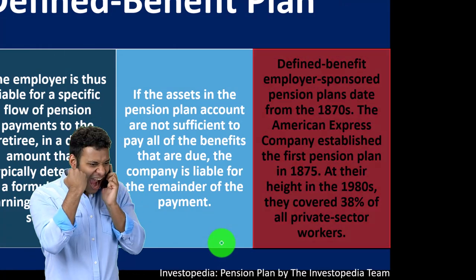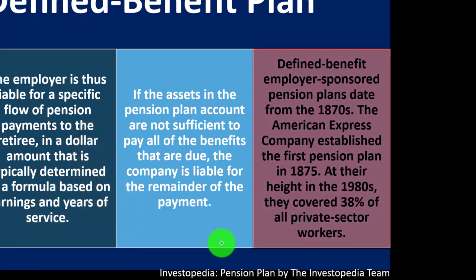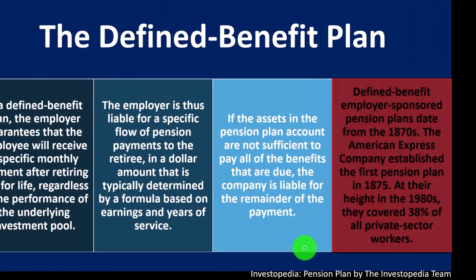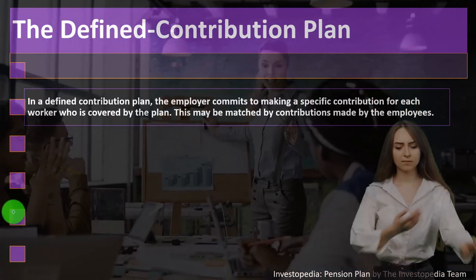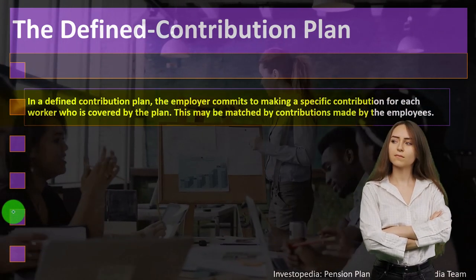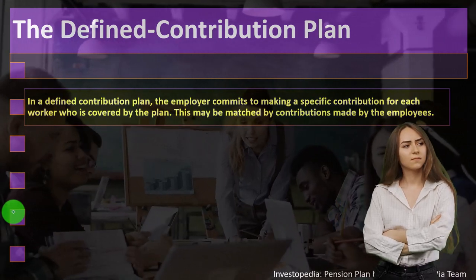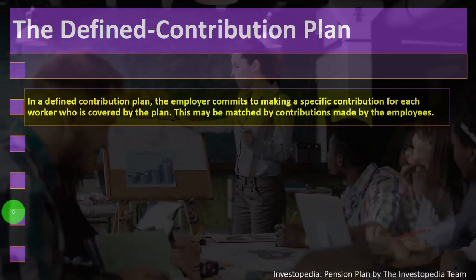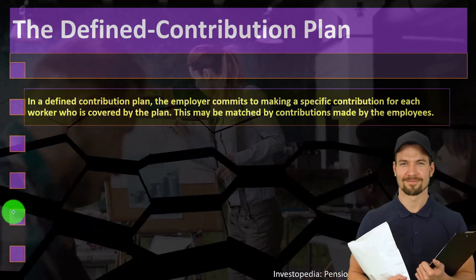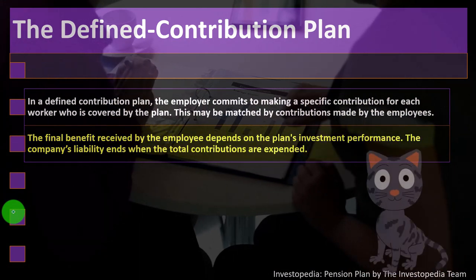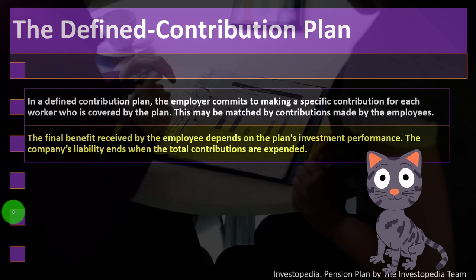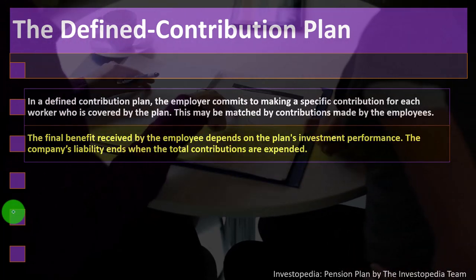If the assets in the pension plan account are insufficient to pay all benefits due, the company is liable for the remainder. Defined benefit employer-sponsored pension plans date from the 1870s — American Express established the first in 1875. At their height in the 1980s they covered 38% of all private sector workers. In a defined contribution plan, the employer commits to a specific contribution for each covered worker.